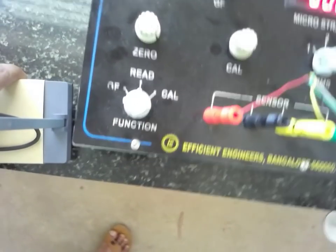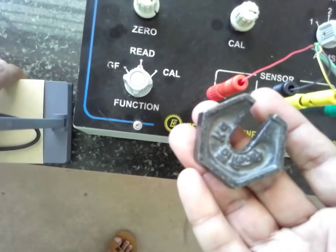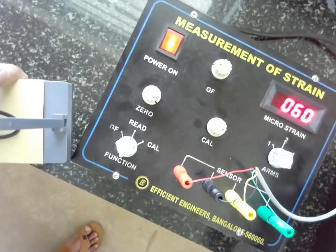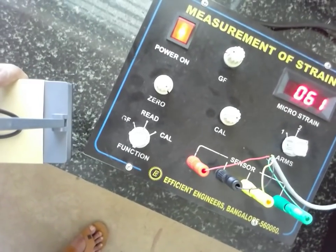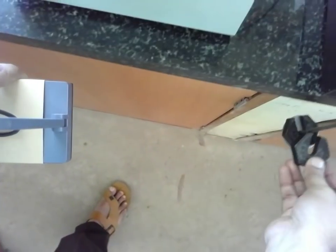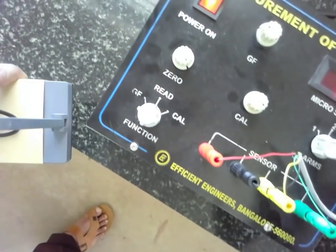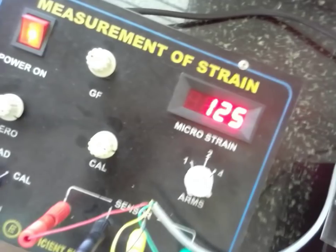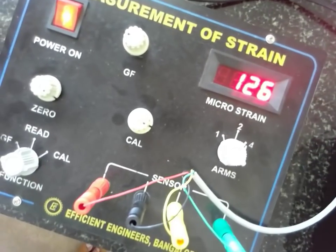Now this is 0.1 kg, place into this pan. After placing this one, check out the reading. The reading is 0.62 for 0.1 kg. Similarly for 0.2 kg, place into this pan. What is the reading? It is 1.26. Make the camera proper. It is 1.26.